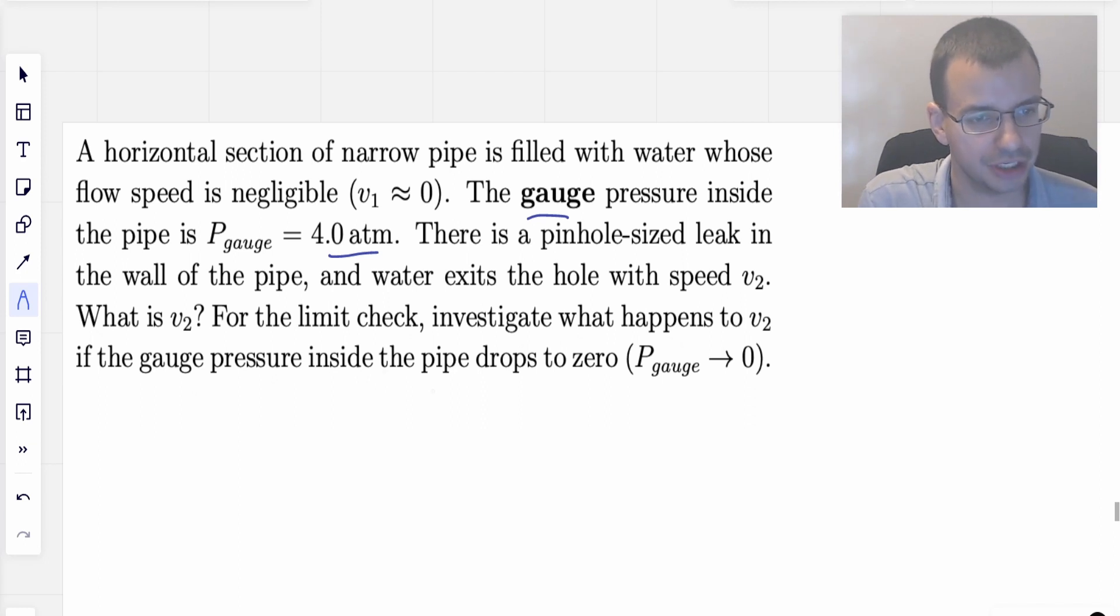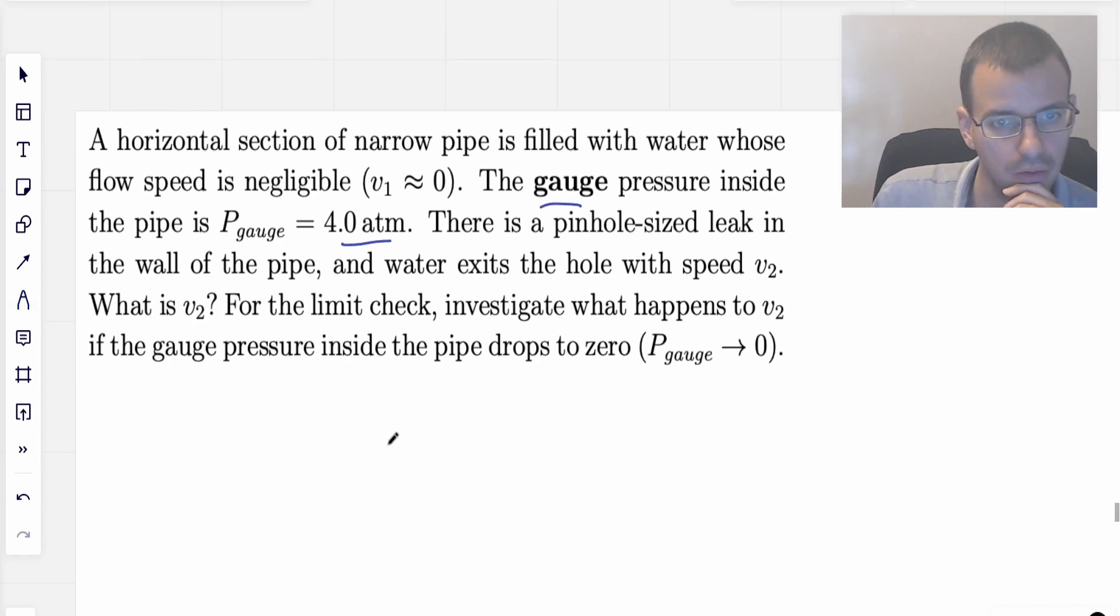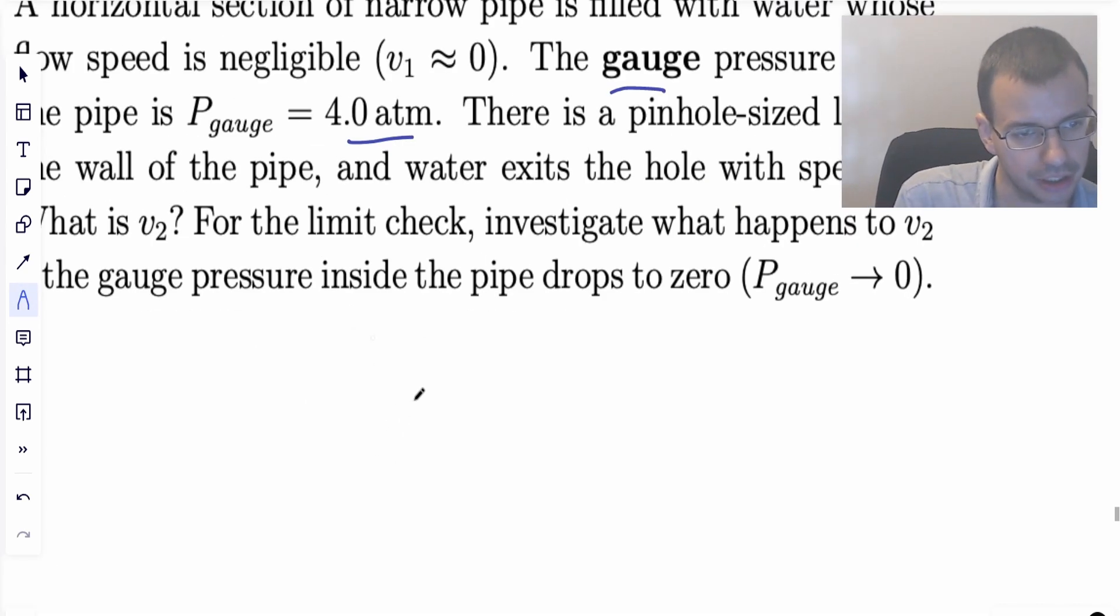For the limit check, investigate what happens to v2. The pressure gauge drops to zero. So the first thing we're going to do is draw a picture, because that is what we always do.